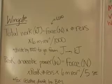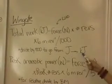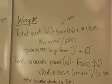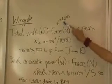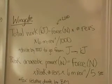Dividing by 1000 is to get from joules to kilojoules. The force is equal to the load that is put on the bike.